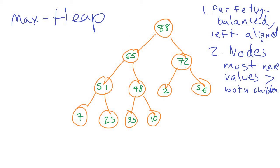We can see that dequeuing from a max heap is simplified because we don't have to search the data structure to find the biggest item — the biggest item always has to be at the root of the tree. That's true because the rules cascade down: if everything under the 88 node is less than 88, and the children of 65 and 72 have to be less than those values respectively, it follows that the biggest node has to be in the root position.